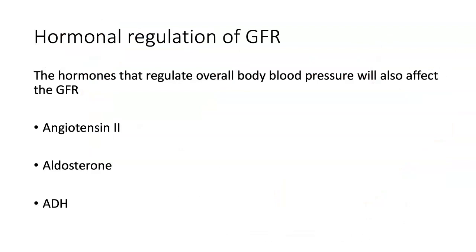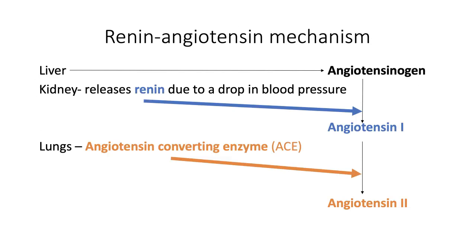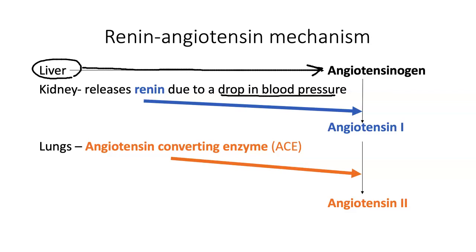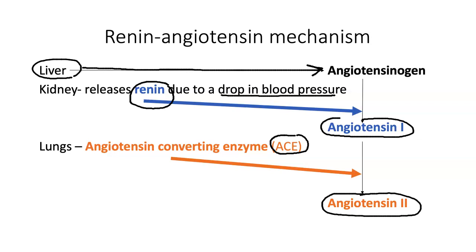The second major way we regulate the GFR is through hormonal regulation. This is mostly a review — the hormones that regulate blood pressure also affect the GFR. Something like angiotensin 2, aldosterone, and ADH. As a quick review of the renin-angiotensin mechanism: the liver always produces a plasma protein called angiotensinogen, a normal blood component. If there's a drop in blood pressure, the granular cells in the juxtaglomerular apparatus sense it and secrete renin. Renin converts angiotensinogen into angiotensin 1.